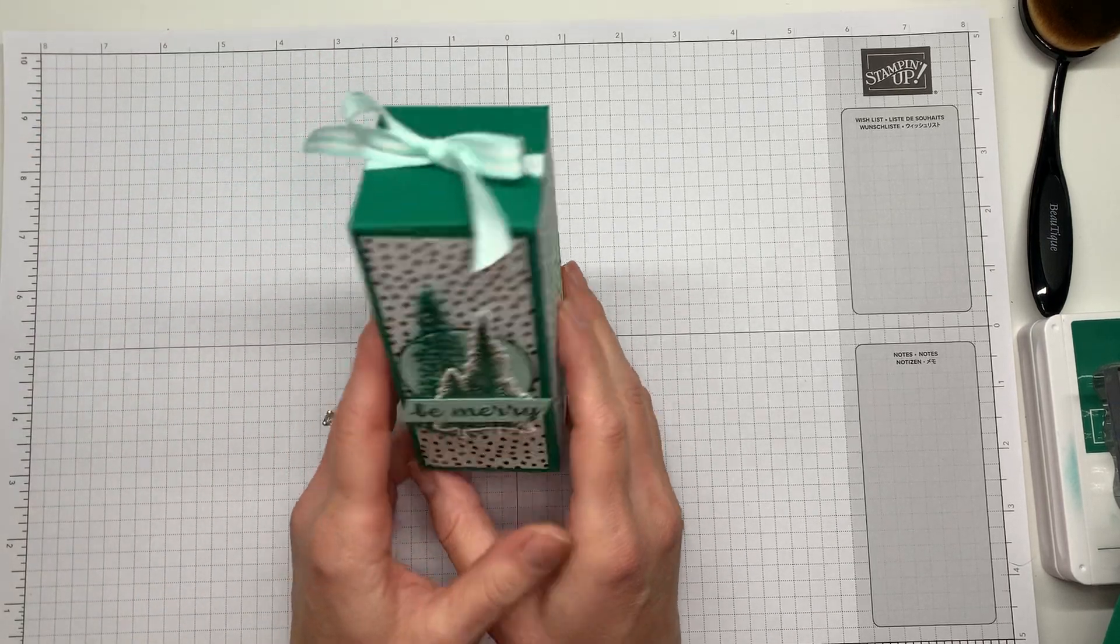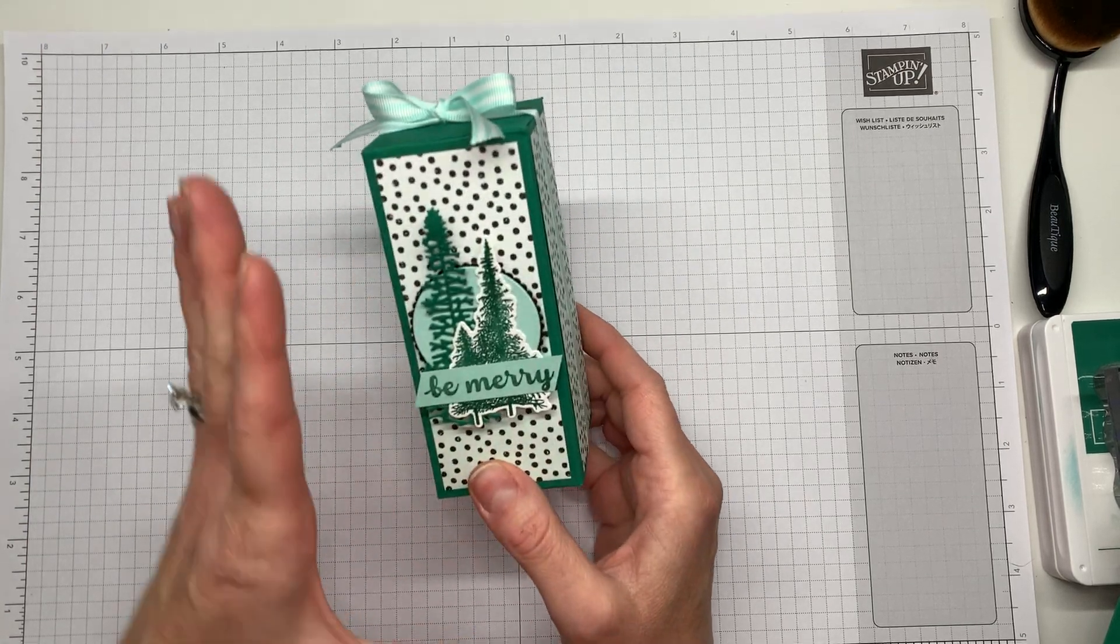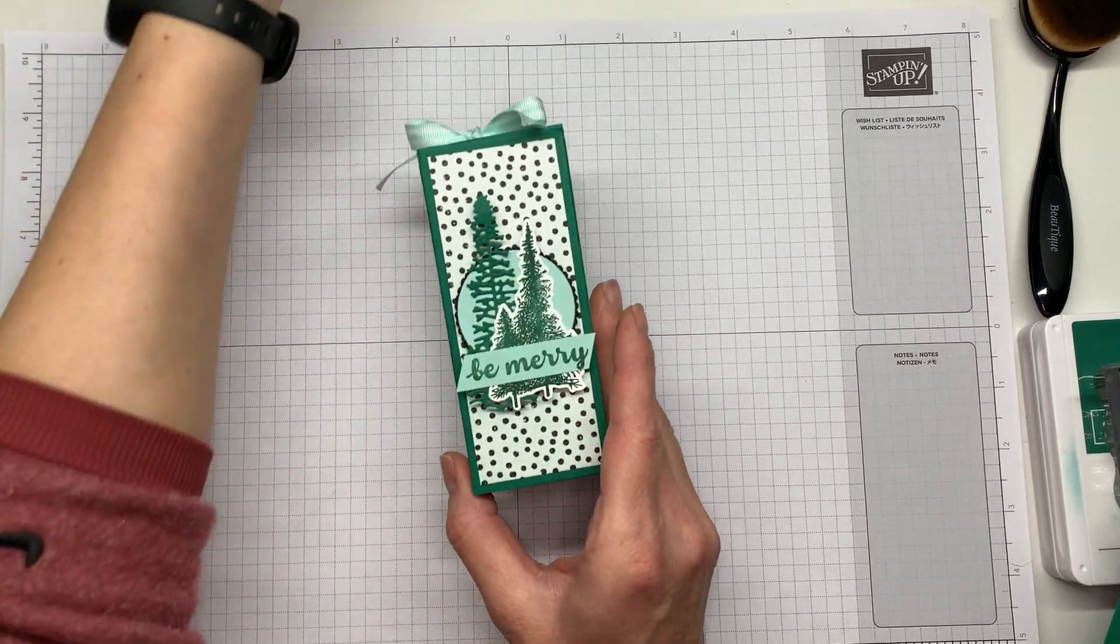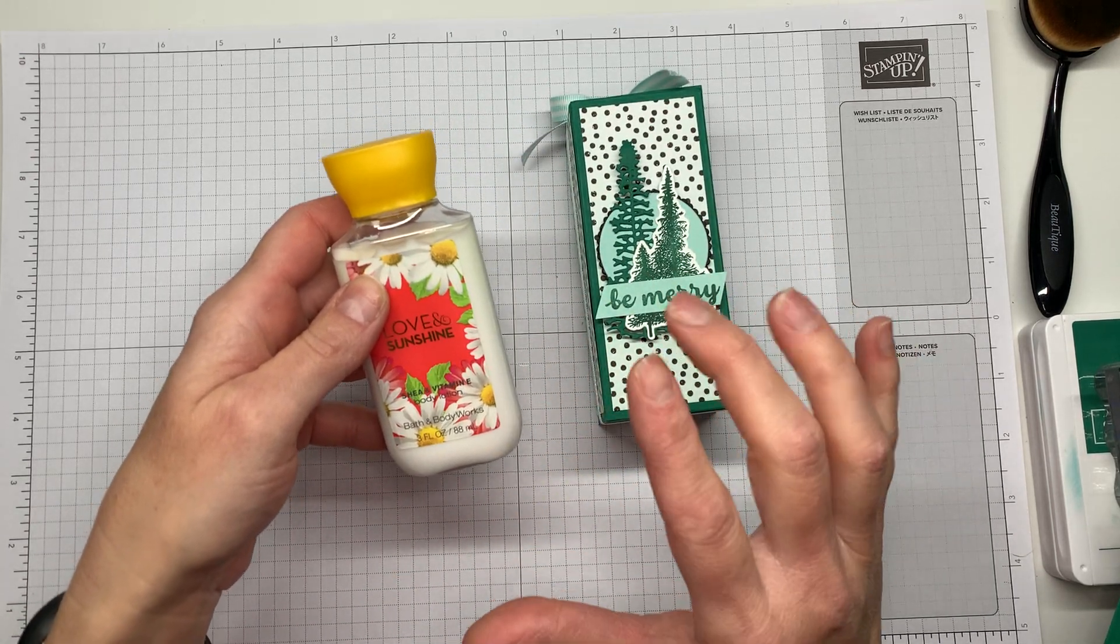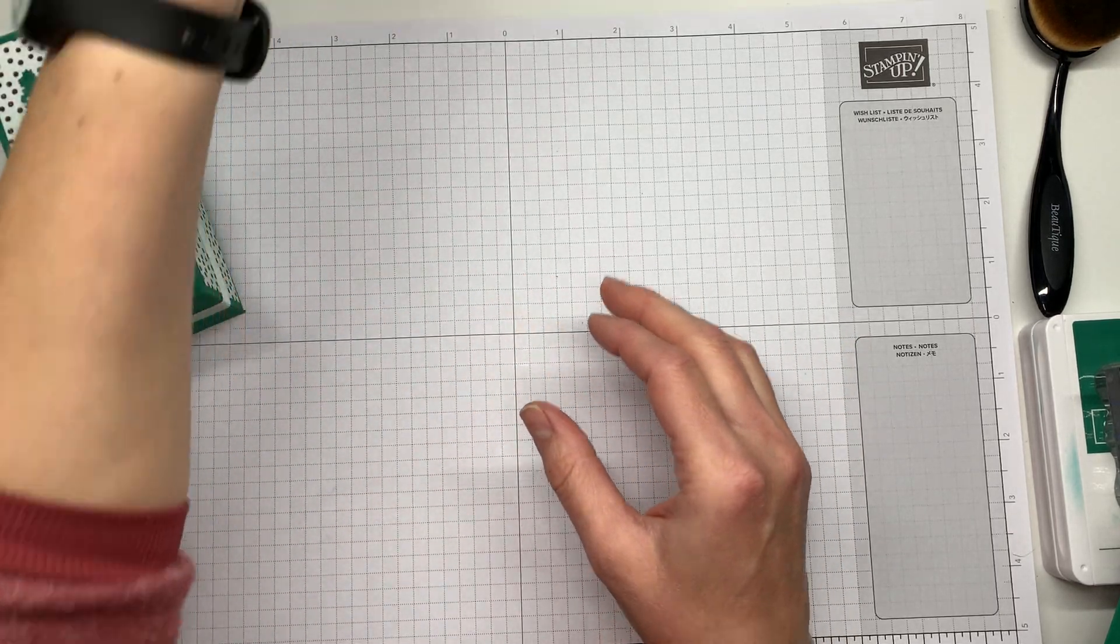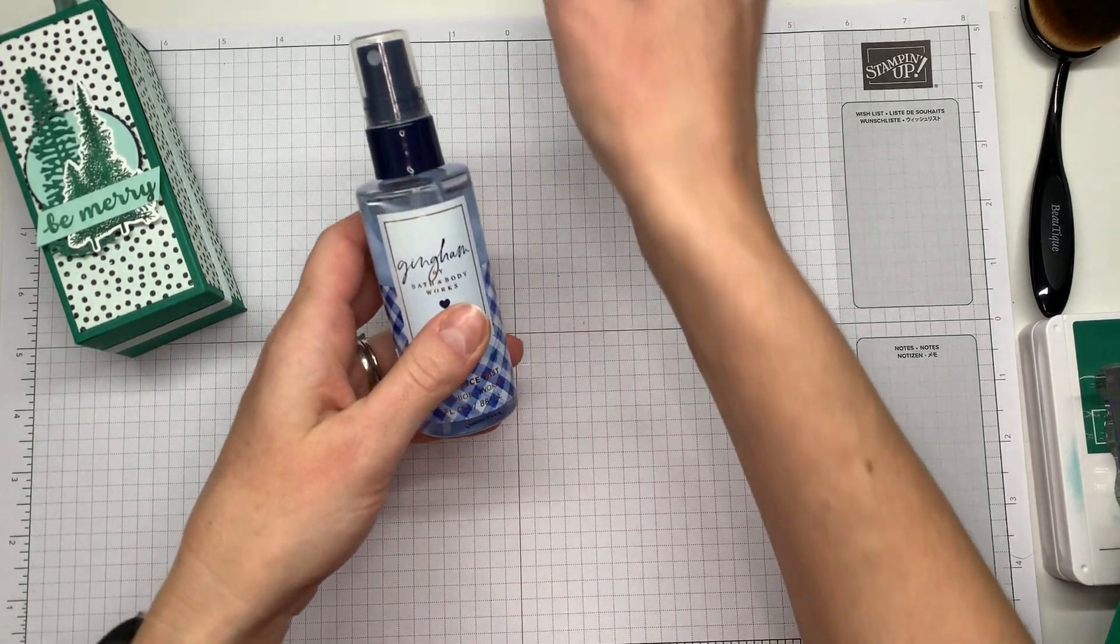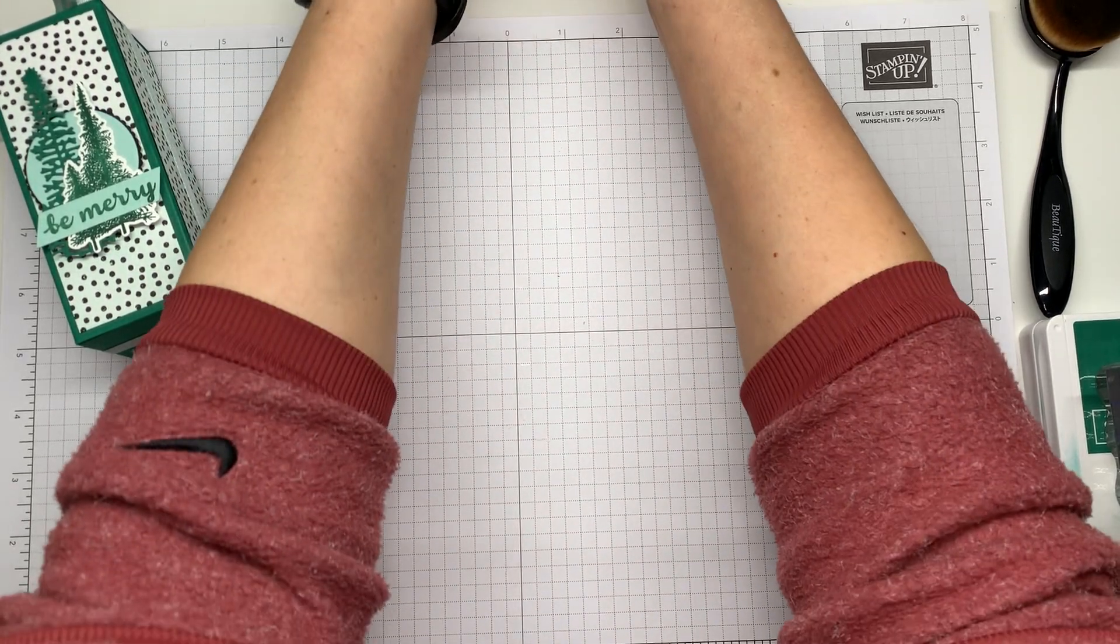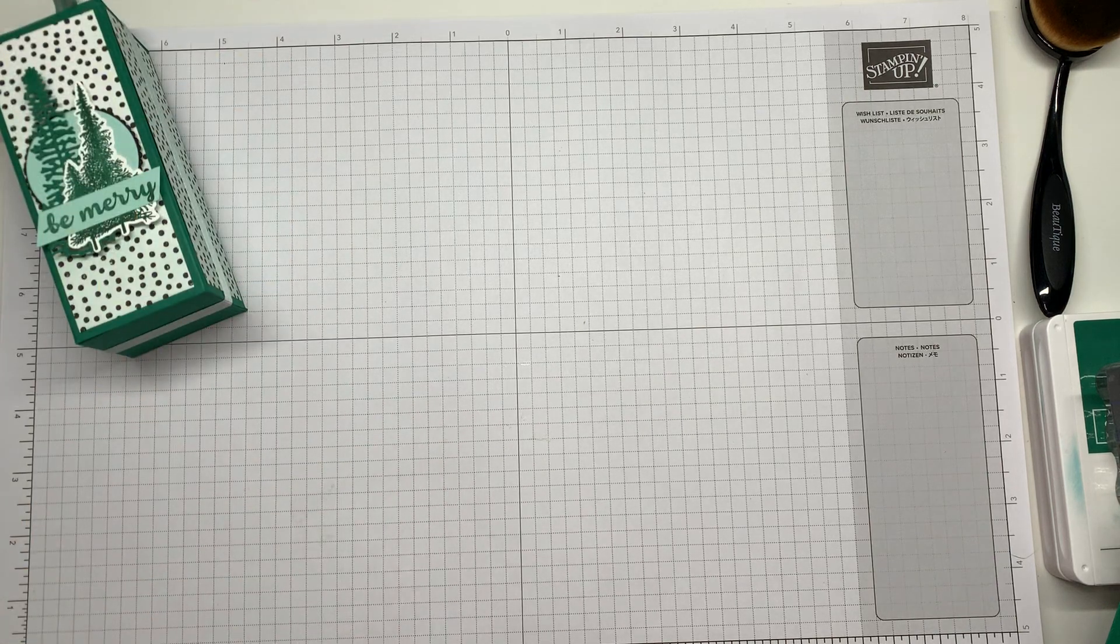So this cute little box is actually really simple to make and I just adapt the measurements depending on what I'm trying to put in it. This one will hold a Bath & Body Works lotion or travel body wash. But what I'm going to make now will actually hold one of these bottles, which this one is a fragrance spray but it is the same bottle as the antibacterial hand sprays that they have now.